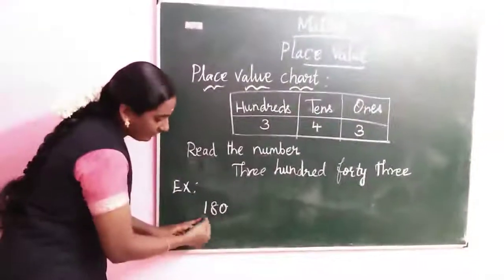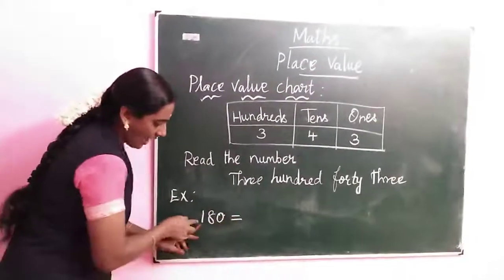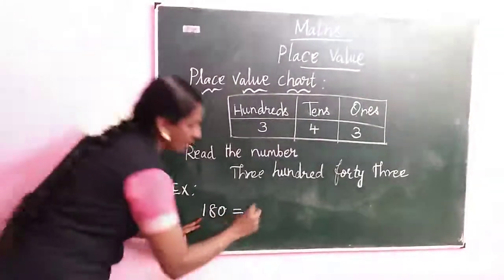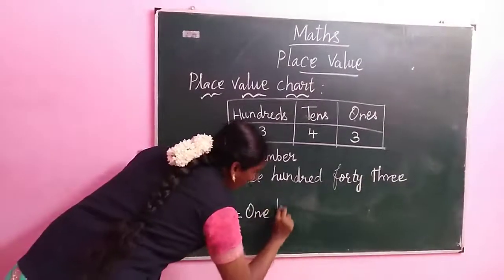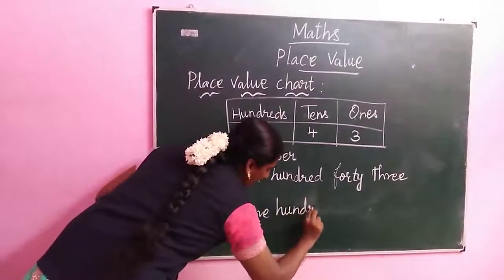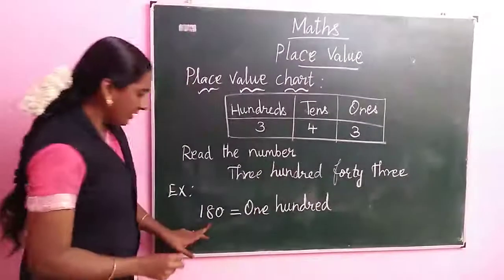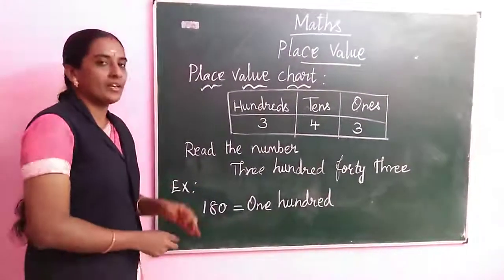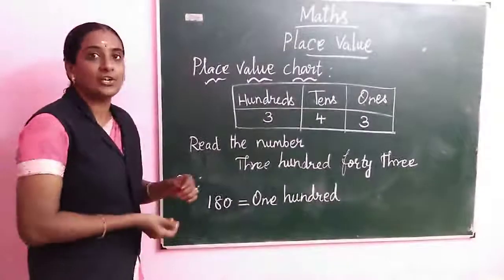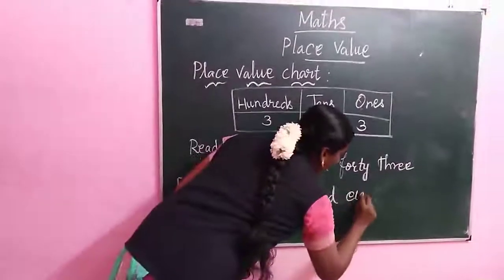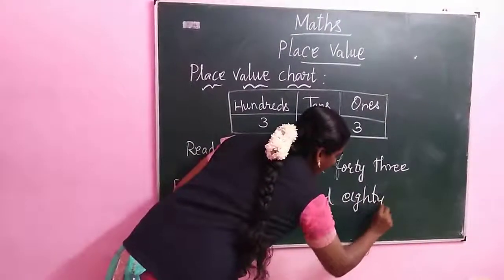1, 10, 100. We are taught the 100. How many 100? 1. 1 hundred. Next is 8, 0. We are joined and read: 8, 0. How to say? 80. 1 hundred 80.